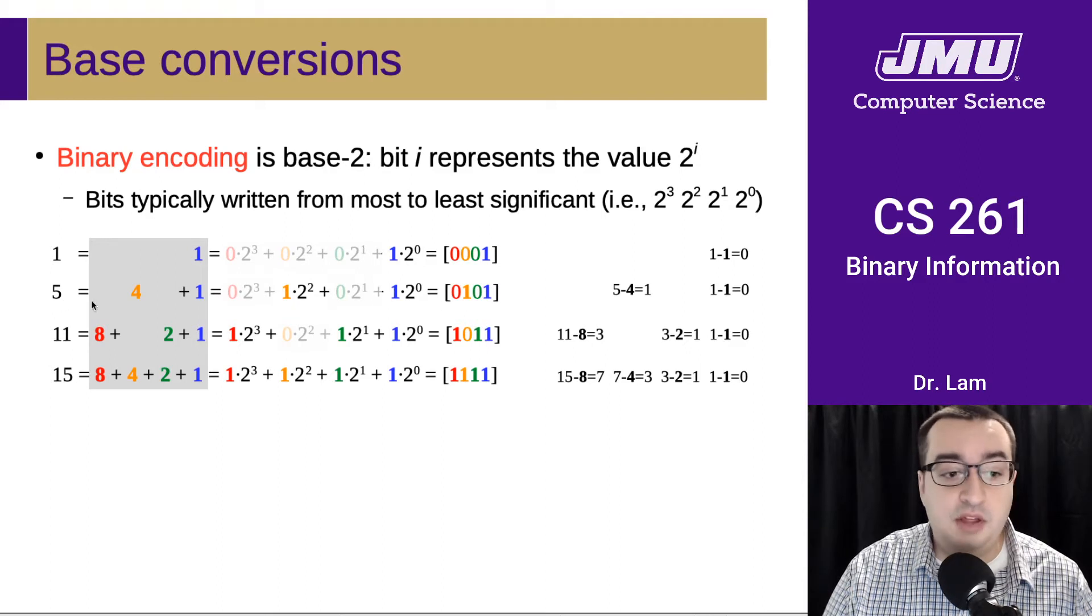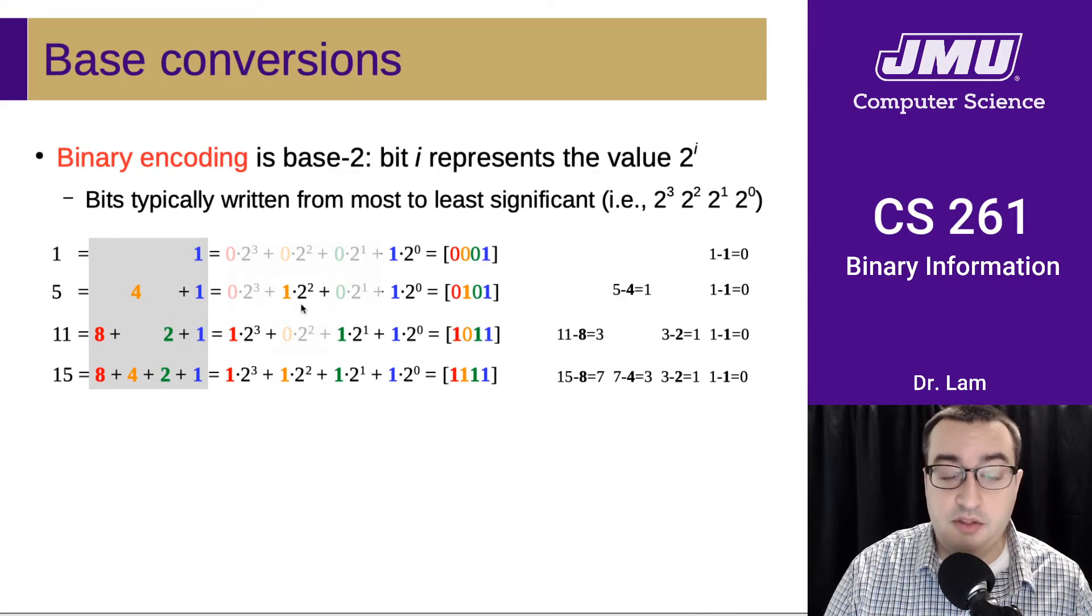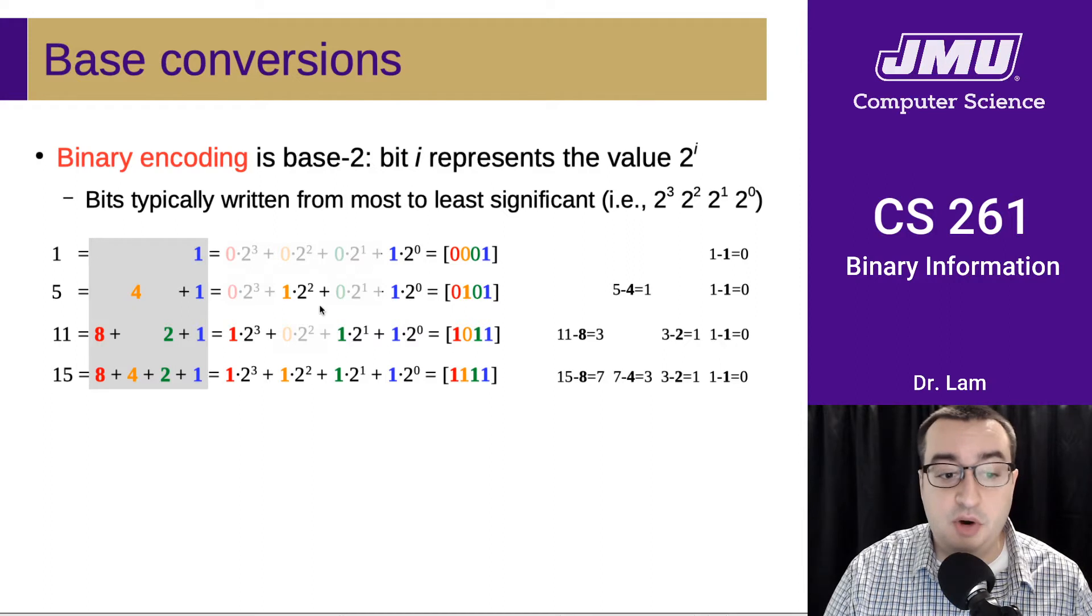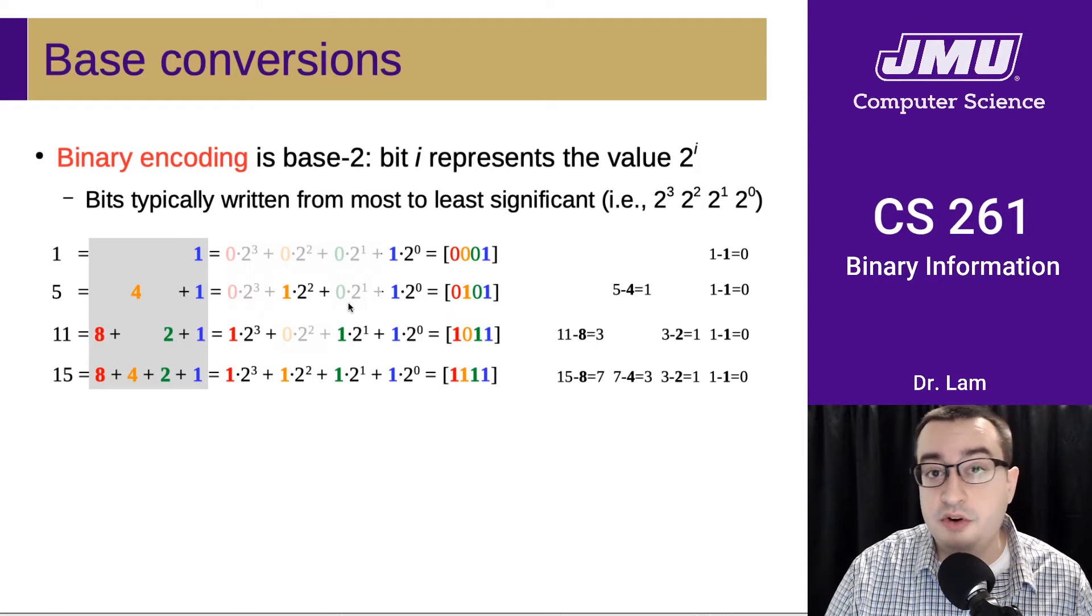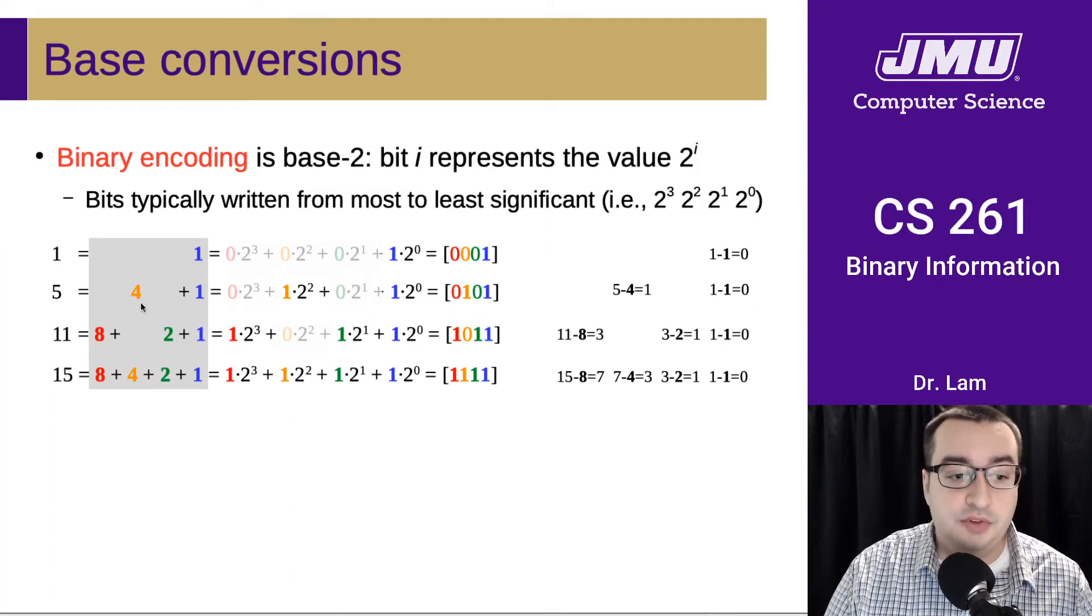You could think about 5 as being 4 plus 1. It is 1 times 2 to the second power (that's the 4) plus 1 times 2 to the zeroth power (which is the 1). This digit, this power of 2, is not present. There are no 2 to the firsts, or twos, once you've subtracted 4 from 5, so there's going to be a 0 in that place in the encoding.